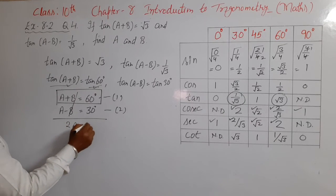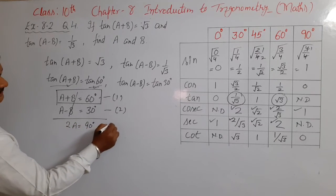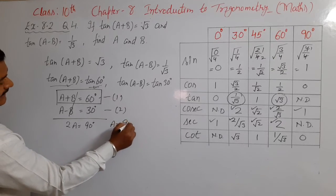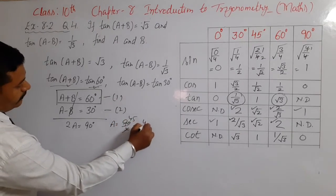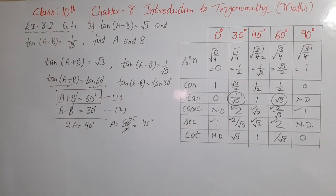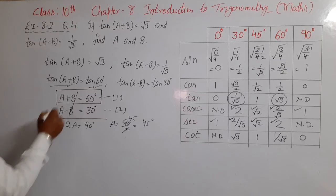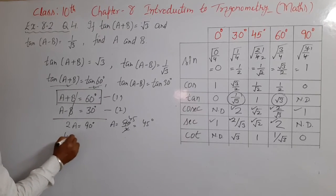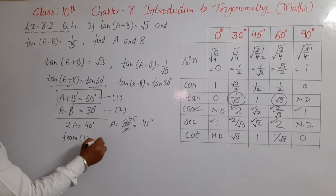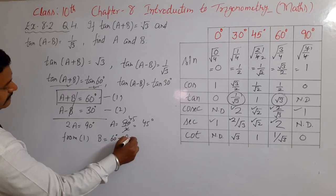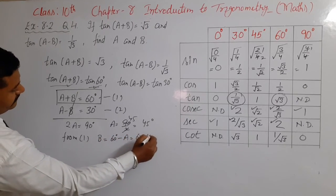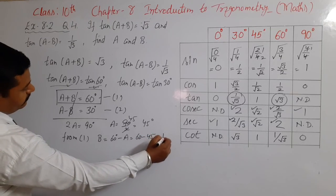2A is equal to 90 degree, that is A is equal to 90 upon 2 is equal to 45 degree. Then from equation one, B is equal to 60 degree minus A is equal to 60 minus 45 is equal to 15 degree.